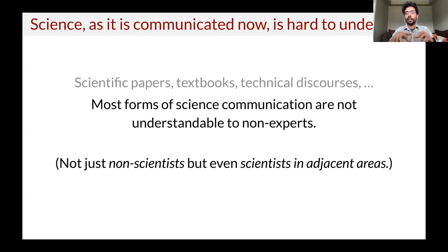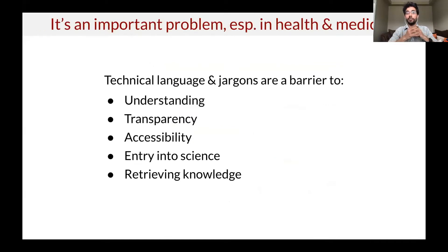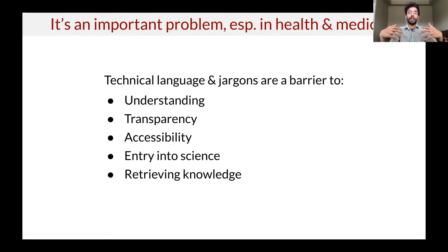The way we communicate science today is super hard to understand. Most science communication happens through papers, textbooks, or technical discourses. A 2017 study looked at published scientific text across several years and noted that the readability of scientific text has steadily gone down over time. Technical language and jargon is a big barrier to communication — specifically a barrier to understanding, transparency, accessibility, entry into science itself, and retrieving knowledge that is essential for the general public.